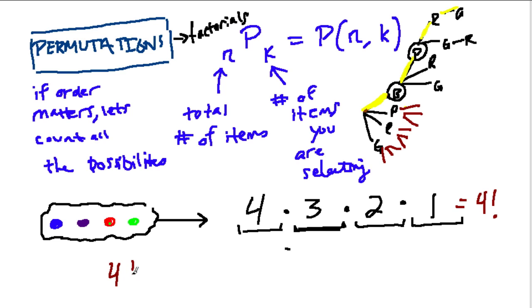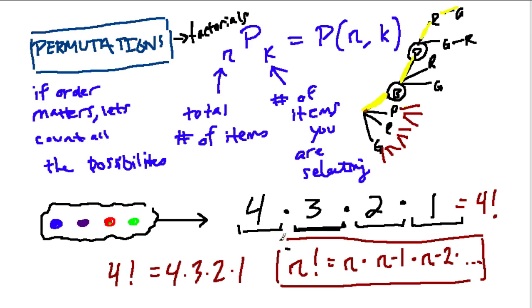And if you remember what four factorial is, that's just four times three times two times one. And in general, we could say what is n factorial? Well, that's just n times n minus one times n minus two, and so forth. This is the idea of a factorial. And this is going to help us come up with that equation we use and see so often for permutations.